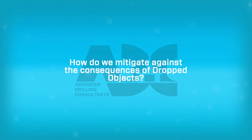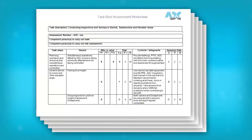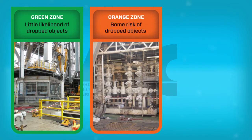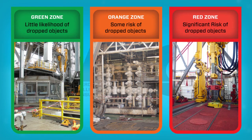So how do we mitigate against the consequences of dropped objects? On rigs we use risk assessments to define different zones. Green zones where there's little likelihood of dropped objects will often include safe routes to the driller's cabin. Orange zones where there's some risk of dropped objects, such as pipe decks or moon pool areas. And red zones where there is a significant risk of dropped objects, including on the drill floor near the well center.